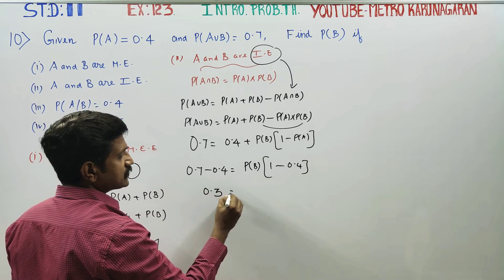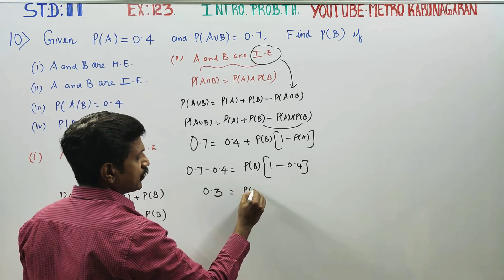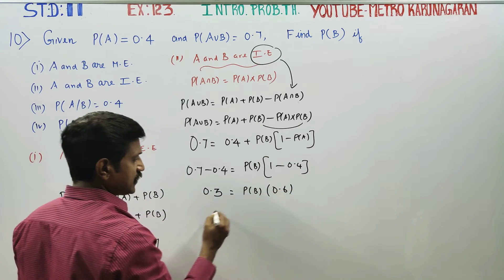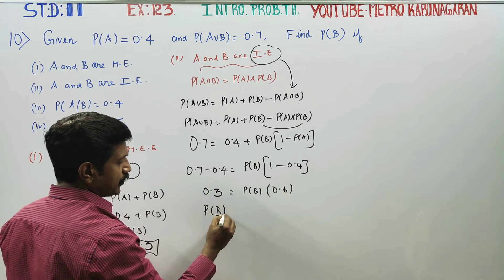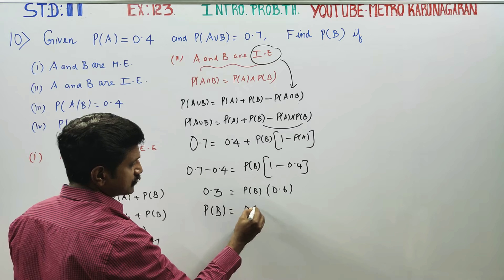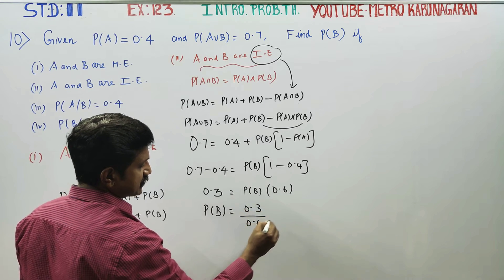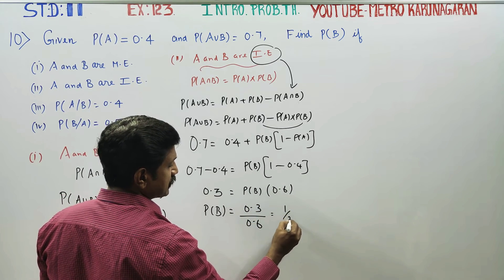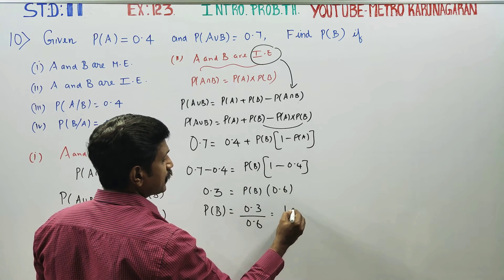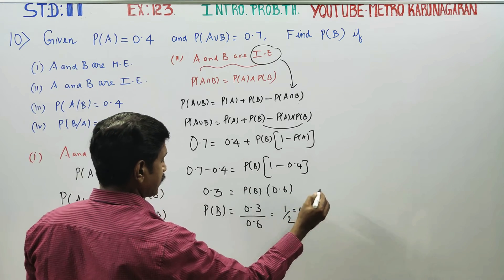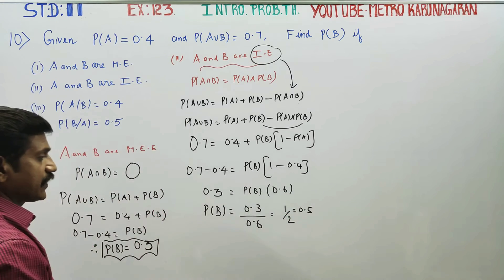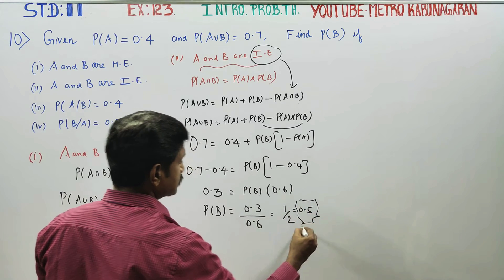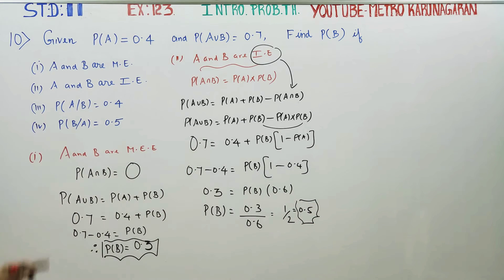From the subtraction: 0.3 = P(B) × 0.6. Therefore, P(B) = 0.3 / 0.6 = 1/2 = 0.5. This is the probability of B in Case 2, where A and B are independent events.